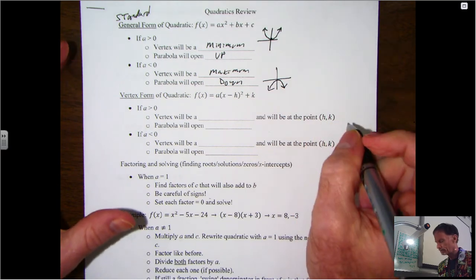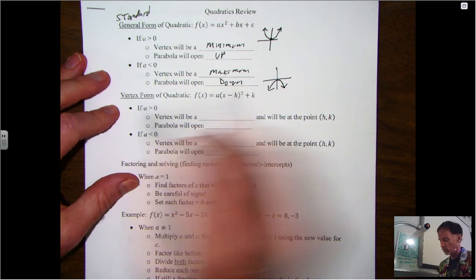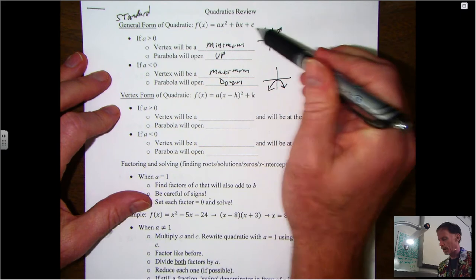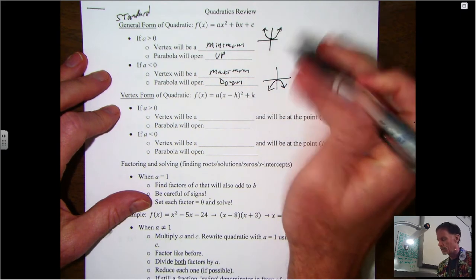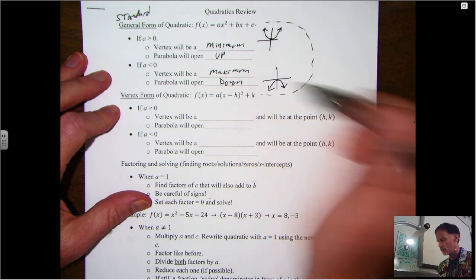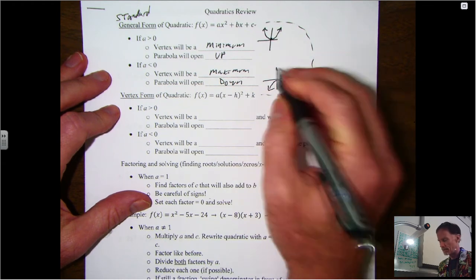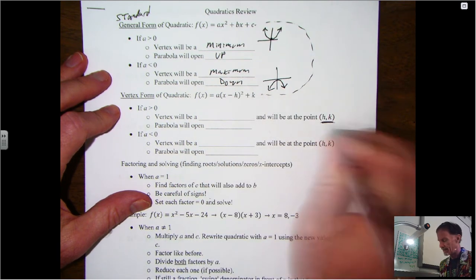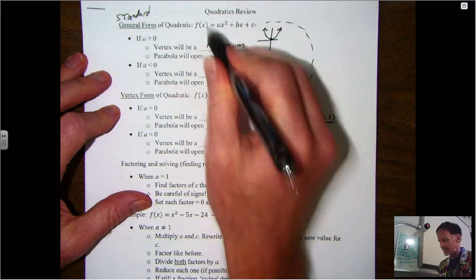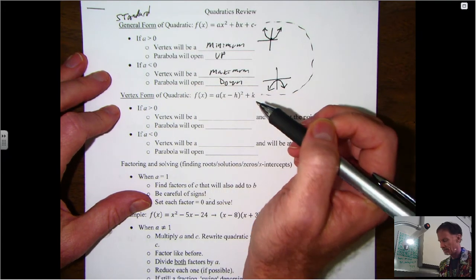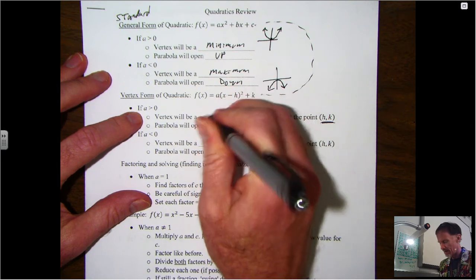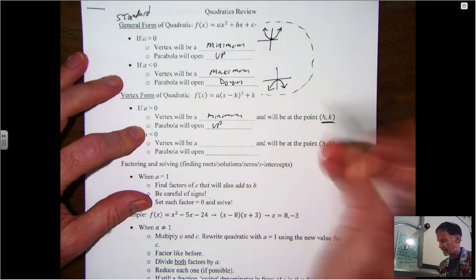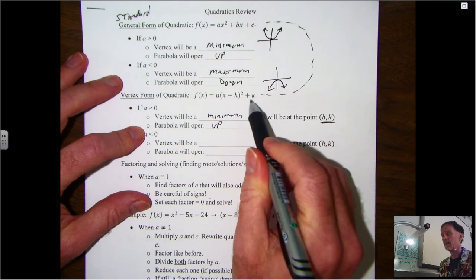Now the other format you're going to see is vertex form because, well, it gives you the vertex. And the main goal starting on Monday is we're going to review a process called completing the square to turn this into this. And again, you probably remember this from your algebra two days. But if you see it in this kind of format, the (h,k) is your vertex. The a is still the same a value, so the vertex is still going to be a minimum if a is greater than zero and the parabola is still going to open up.